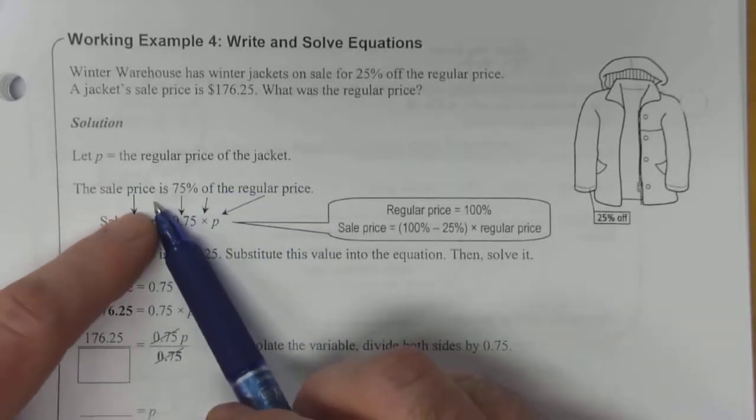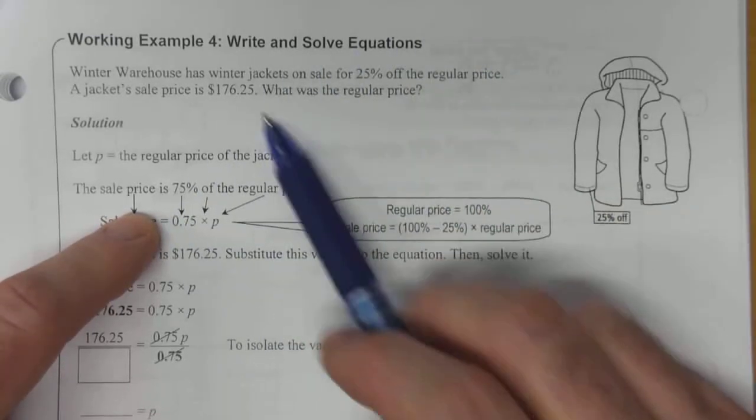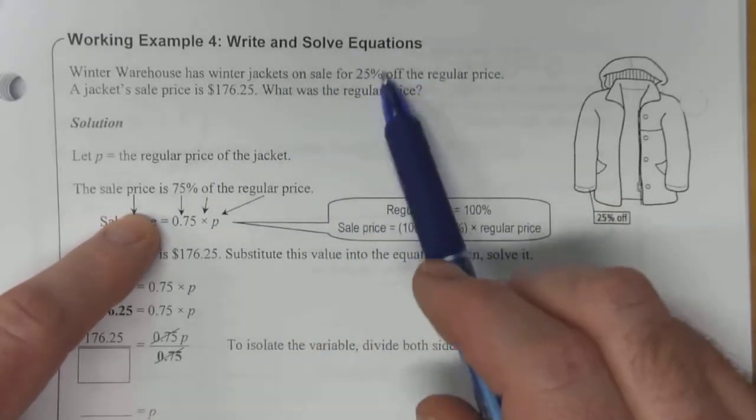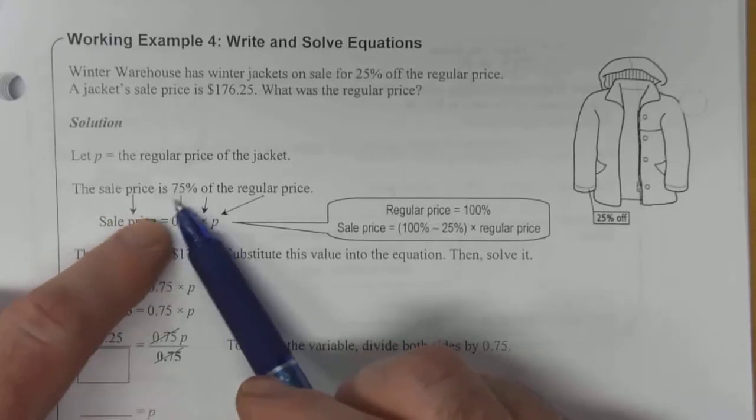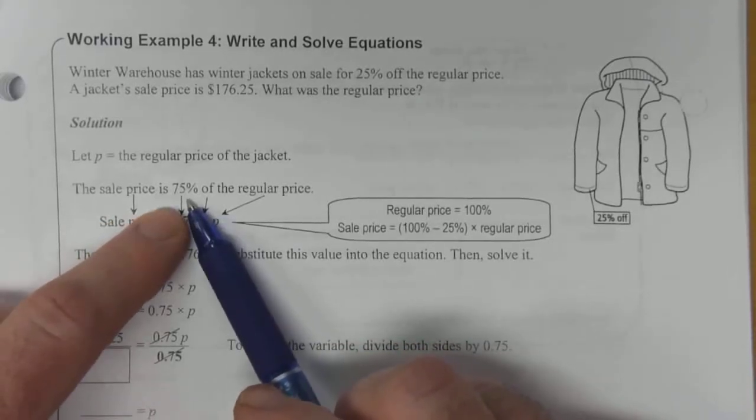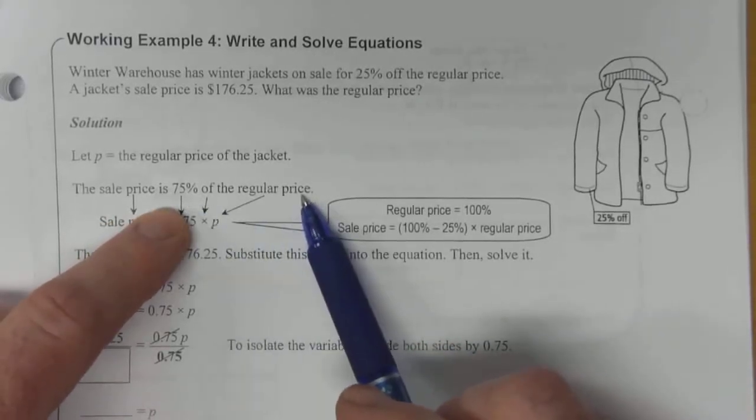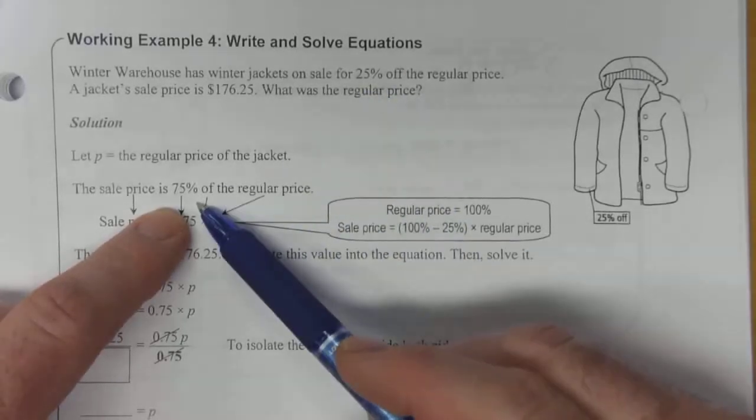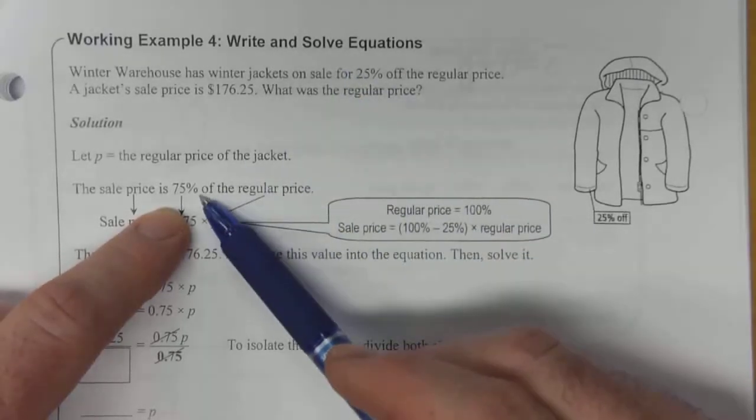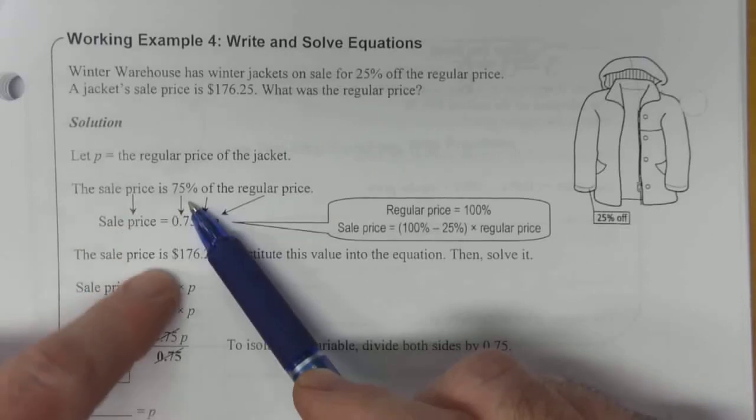The sale price. Now here's where you have to understand what is being talked about. It's 25% off the regular price, so that means your sale price is actually 75% of the regular price. You need to be able to do that conversion. 25% off actually means you're spending 75% of the original price.